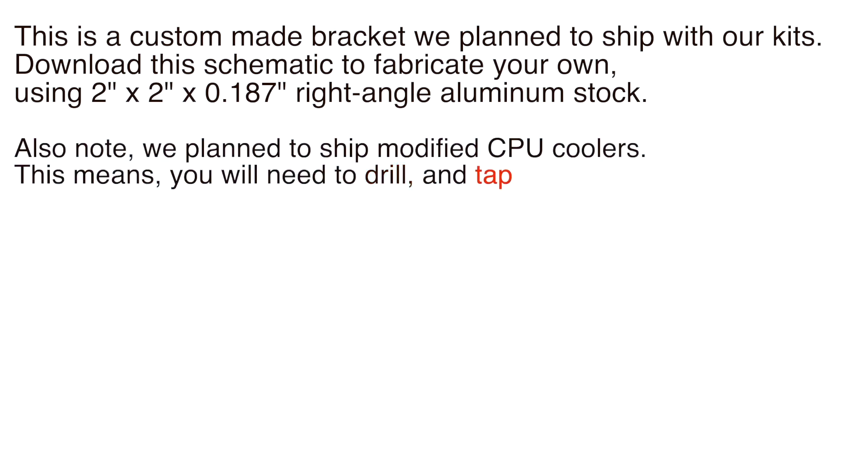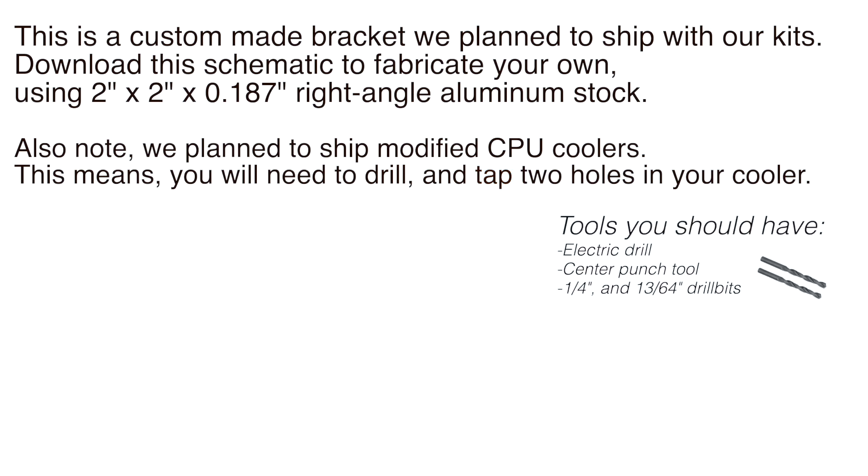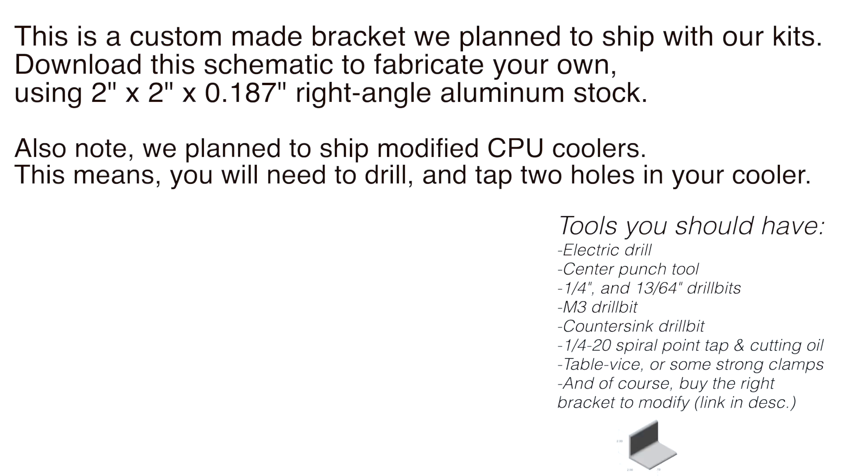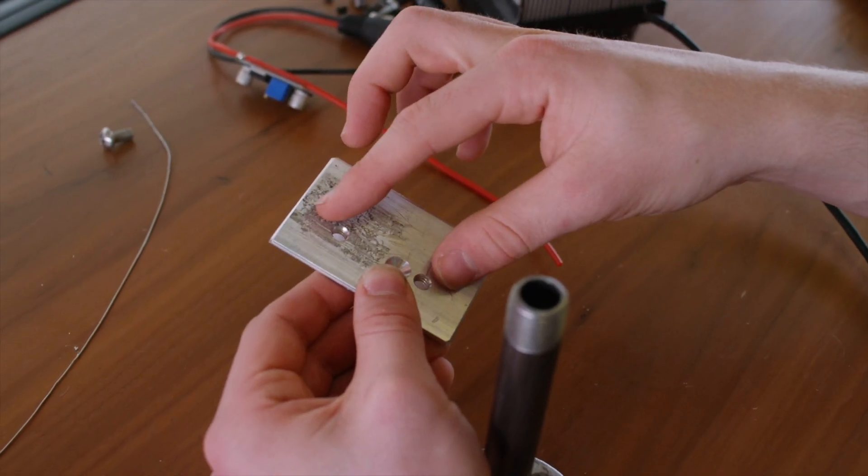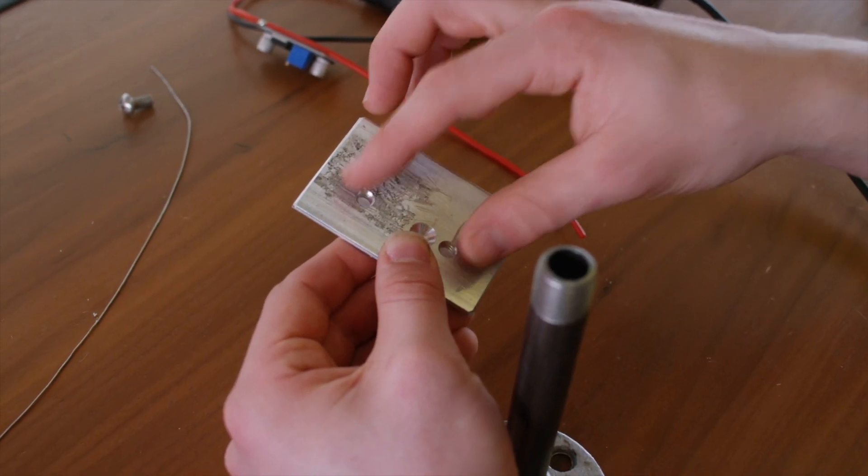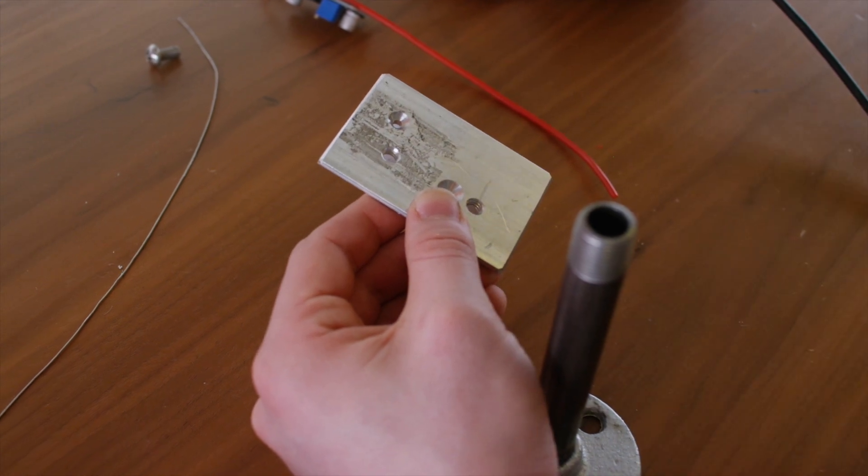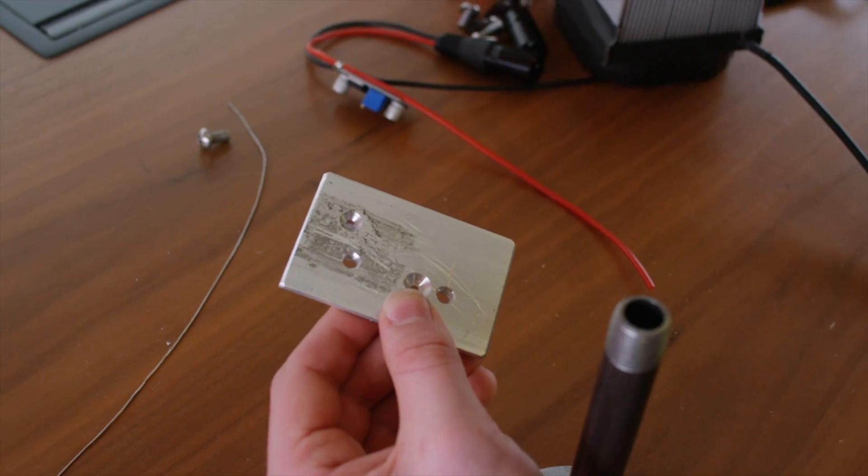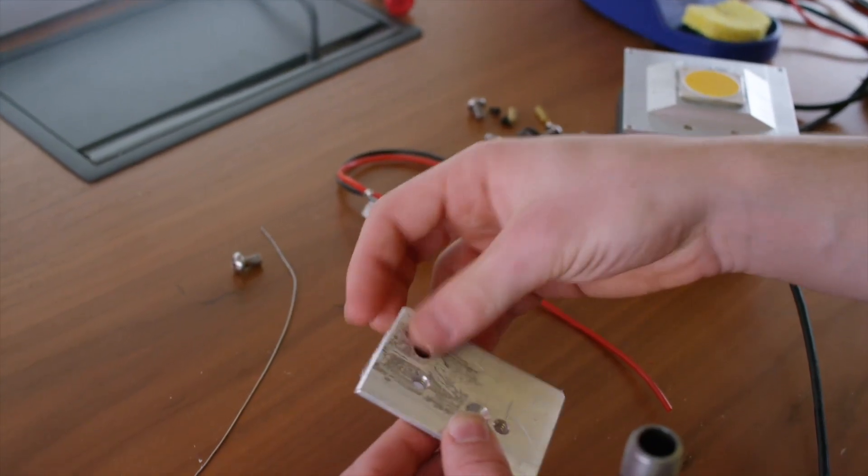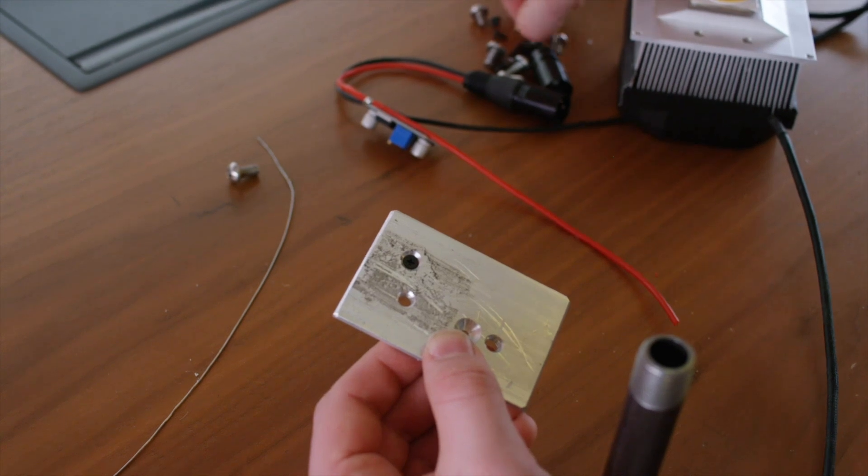So the bracket on one side has two tapped or threaded quarter 20 holes and then two through holes for M3 bolts. We're going to go ahead and take these countersunk tiny M3 screws and put them through onto these standoffs. You can kind of screw them down pretty tight with your hands.